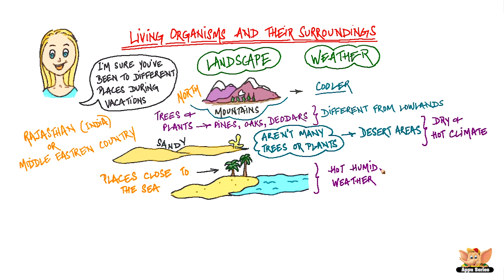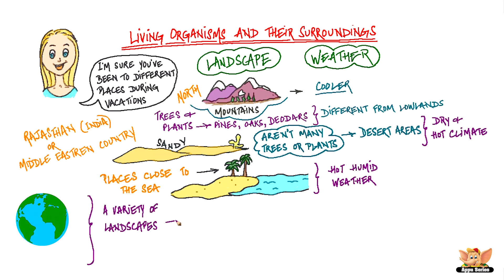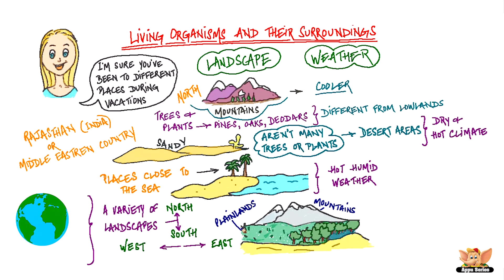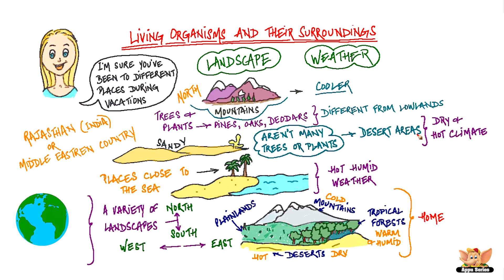Our world consists of a variety of landscapes from north to south and west to east. There are mountains, plainlands, tropical forests and deserts. All these places are so different from each other. Some are cold, some are hot and dry and some warm and humid. Yet, all of them are home to some or the other form of plant and animal life.